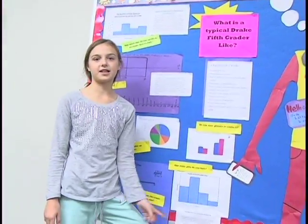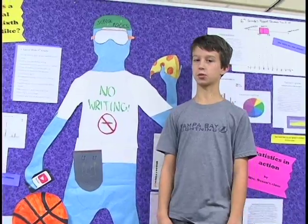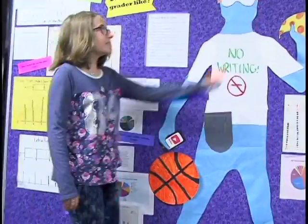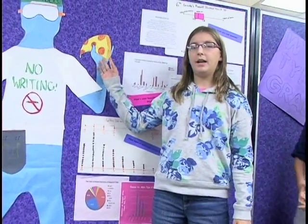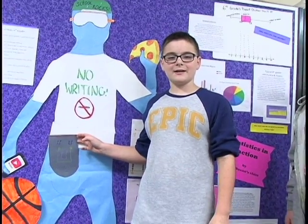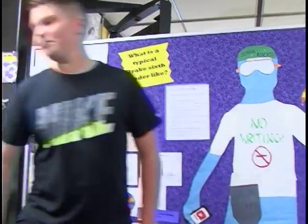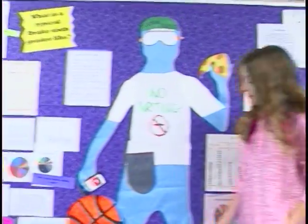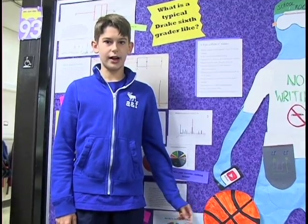The typical sixth grader generally likes school because they give it a 7 out of 10, one being the worst and 10 being the best. They say their favorite subject is science, their favorite comfort food is pizza, they hate writing, they spend about 1 to 2 hours on electronics daily, their favorite music genre is pop, they love dogs, their favorite site is YouTube, their favorite clothing brand is Nike, and they take part in about 2 to 3 extracurricular activities.